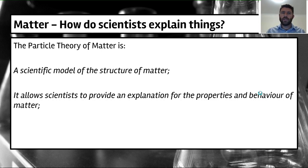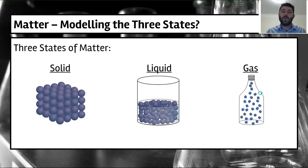So what do scientists do? How do they explain things? This is where we're going to start to get into our ability to explain, and we're going to use something called the particle theory of matter. Now you may have seen the particle theory and used it, and we're going to be building upon that. But basically what it is, it's a scientific model of the structure of matter. Scientists use these models to provide an explanation for the properties and behavior of matter. So what are its characteristics and how it actually behaves when certain things happen. On the next slide we're actually going to see an example of the modeling of the three states of matter.